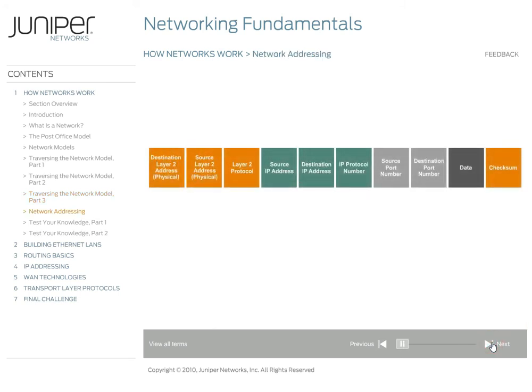To understand how networks work, it's critical to understand the two different types of addressing networks use. As we just mentioned, layer 3, or the network layer, adds an address to the data as it flows down the stack. Then, layer 2, or the data link layer, adds another address to the data. So, why bother with two different addresses? To understand the role of the two different addresses, let's return to our post office analogy.